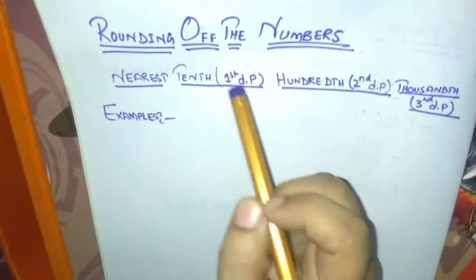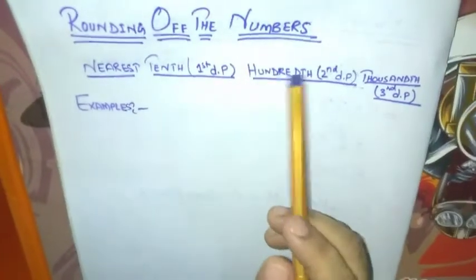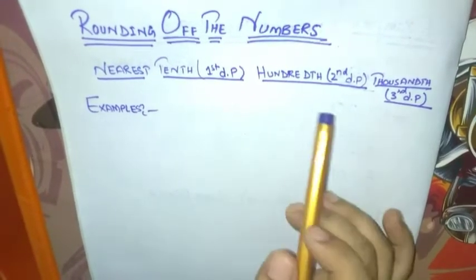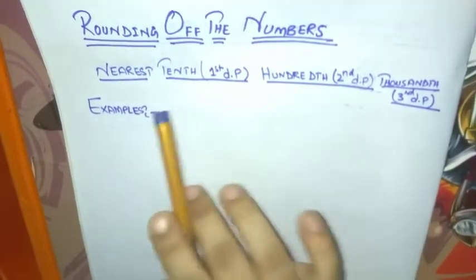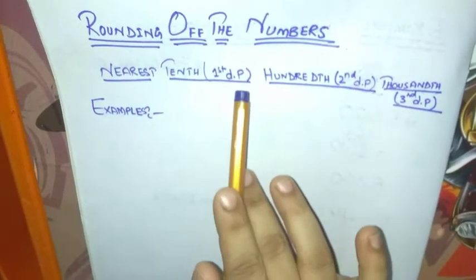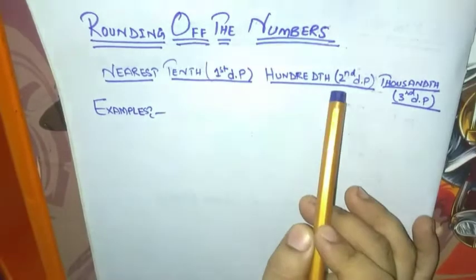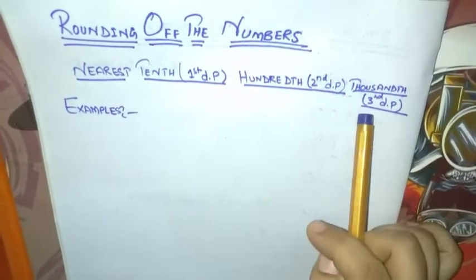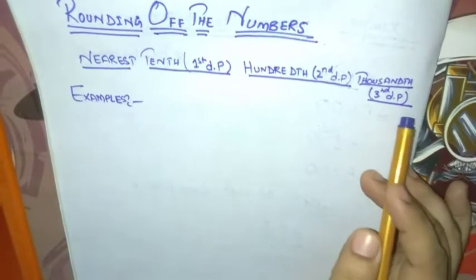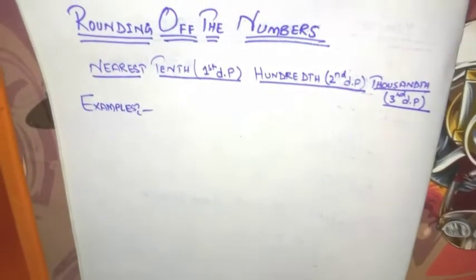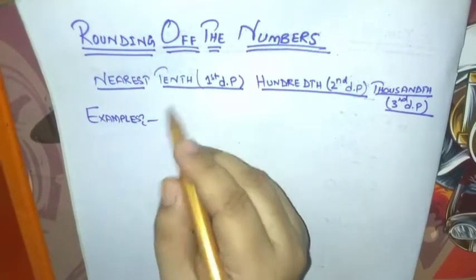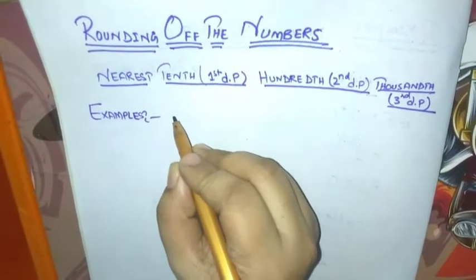Assalamu alaikum. Today my topic is rounding of numbers to the nearest tenth place, hundreds place, and thousands place. The nearest tenth place is also called the first decimal point, the hundreds place is also called the second decimal point, and the thousands place is also called the third decimal point. Now we will move to its examples. The first example is about the nearest tenth place.